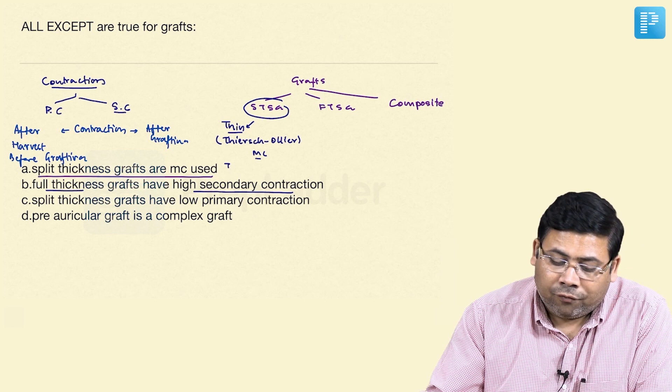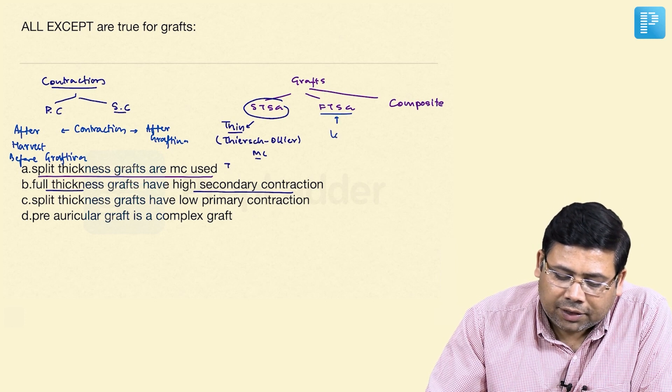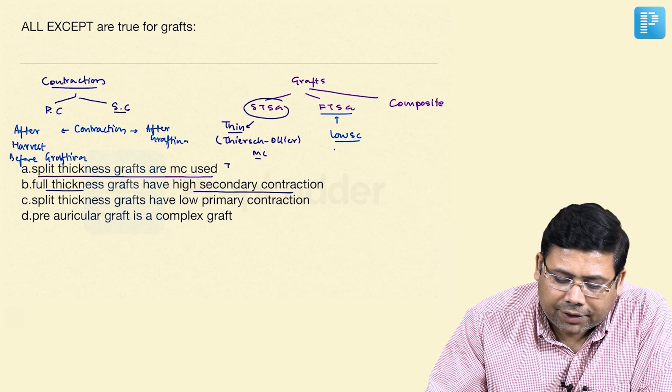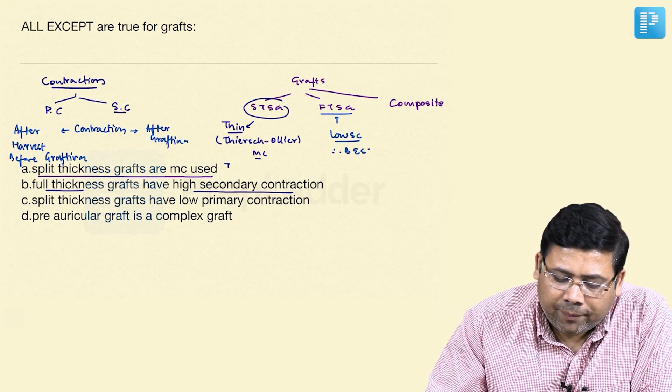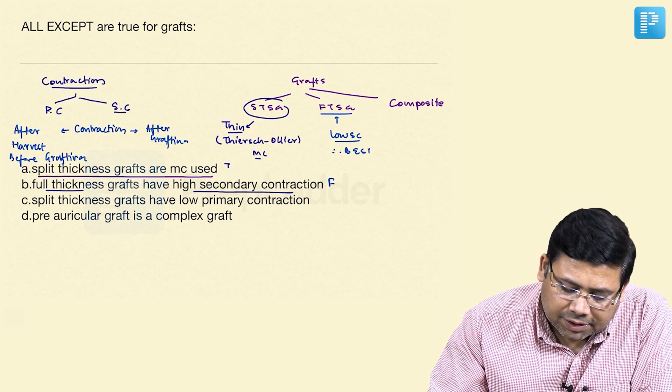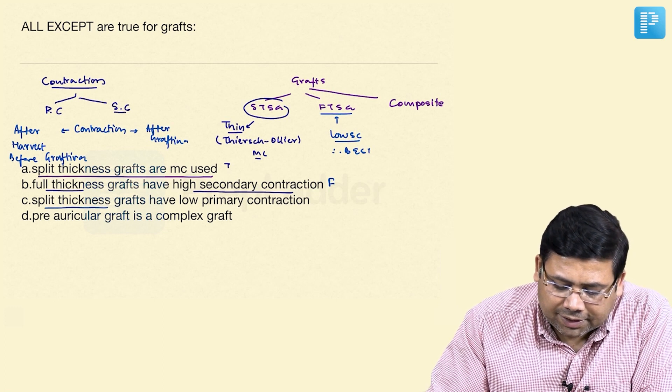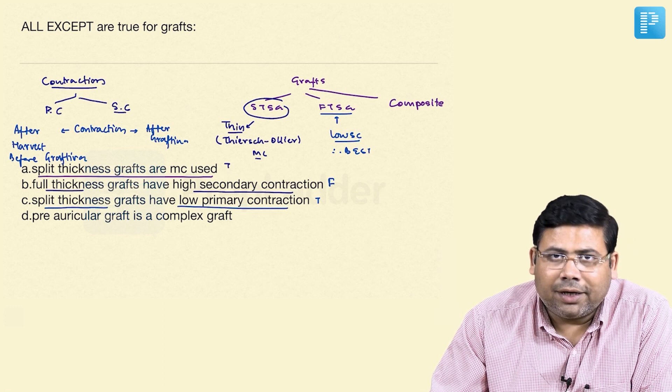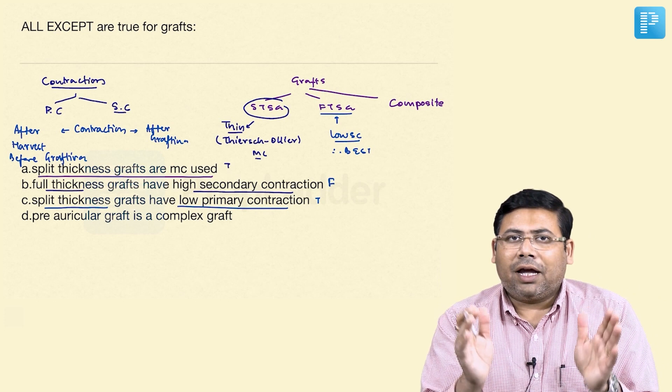Remember, full thickness grafts have low secondary contraction, and therefore they are the best grafts. So this point is false. Split thickness grafts have low primary contraction. Yes, since they are thin, they will have less.